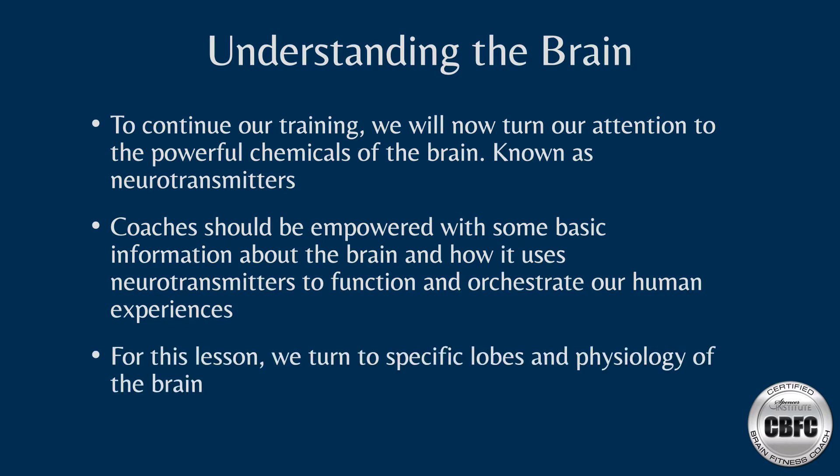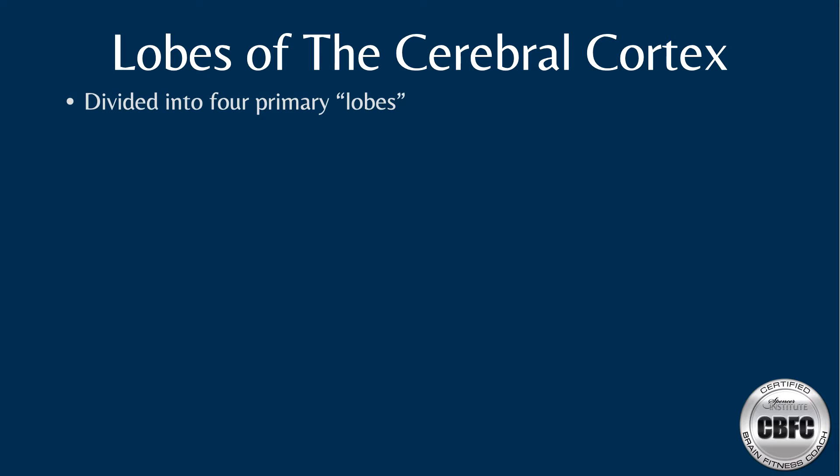Starting with the cerebral cortex, the lobes of the cerebral cortex serve many different functions within our brain. The total volume of the brain is approximately 1,500 cubic centimeters, and the cerebral cortex is an impressive 75% of this total volume. The surface contains a layer of gray matter composed of gyri and sulci, creating a cortical thickness of 2.2 meters. The cerebral cortex is divided into four primary lobes: the frontal, temporal, parietal, and occipital lobe.